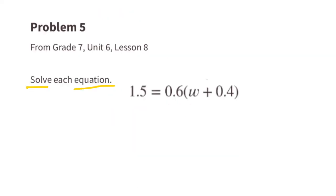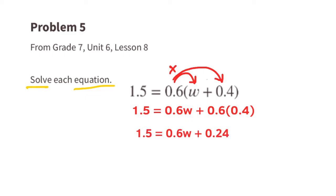Again, we need to multiply the term on the outside of the parentheses by both terms on the inside of the parentheses. 0.6 times W plus 0.6 times 0.4. 0.6 times 0.4 is 0.24, so we can rewrite this as 1.5 equals 0.6W plus 0.24. To get the term with the W by itself, we need to subtract 0.24 from both sides of the equal sign, which leaves us with 1.26 equals 0.6W. To make it just 1W, we need to divide both sides by 0.6. W equals 2.1.